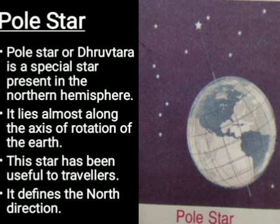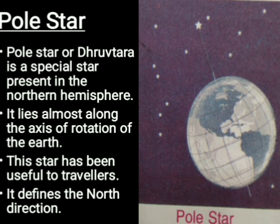The Pole Star, or Dhruv Tara, is a special star present in the Northern Hemisphere. This star appears to remain fixed at one place. This is because it lies almost along the axis of rotation of the Earth. Because of this special feature, the Pole Star is very useful to travelers — it defines the north direction.